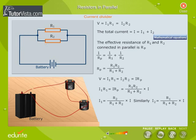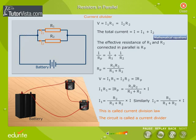That is, current through one branch is equal to the resistance of the other branch multiplied by the total current, divided by the total resistance. This is called current division law, and the circuit is called a current divider. In domestic circuits, the bulbs are connected in parallel.